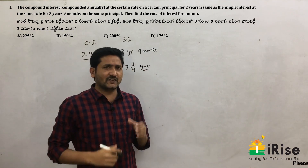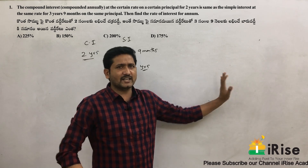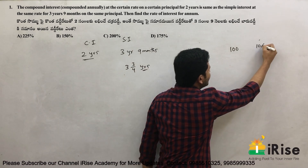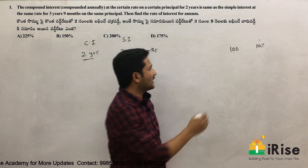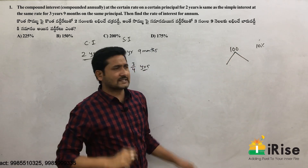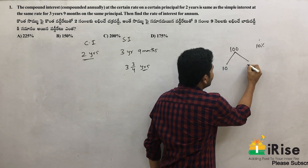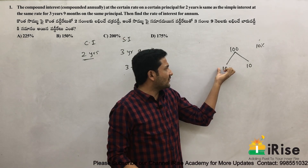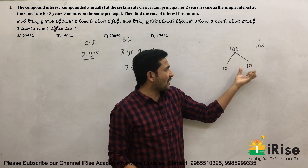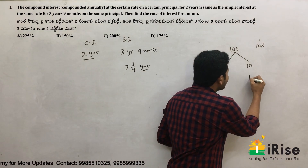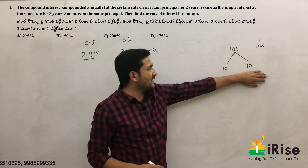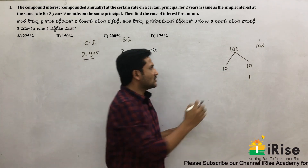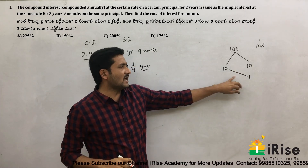The difference between compound interest and simple interest is that in CI, you pay interest on interest. For example, if the principal is 100 and the rate is 10%, in simple interest you get 10 each year. In compound interest, the second year you also pay interest on the first year's interest — that is 10% of 10 = 1 extra.